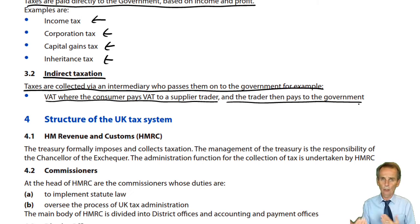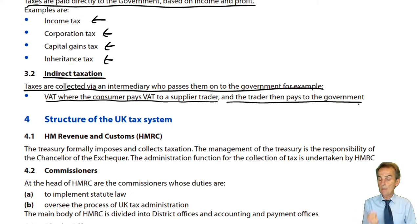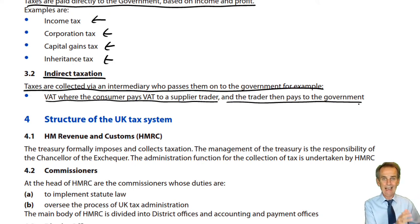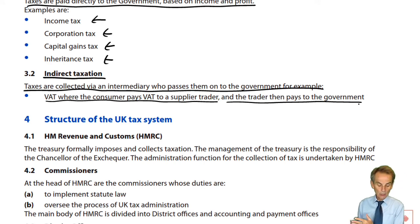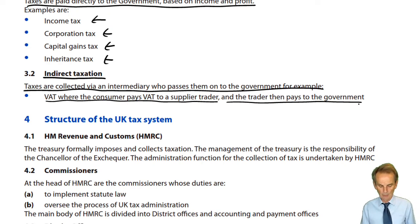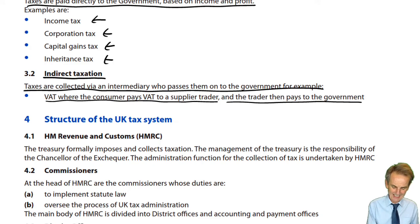That individual — like you or I walking into the shop, that final consumer — we pay a figure, £120 in my example. We do not segregate between the trader and HMRC. The trader has to account for that VAT. So we've got direct taxes, which form basically the vast majority of our syllabus, and now we've got an indirect tax: VAT.